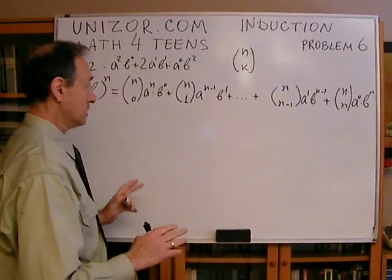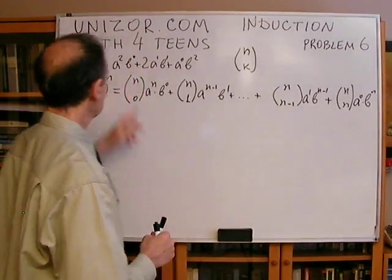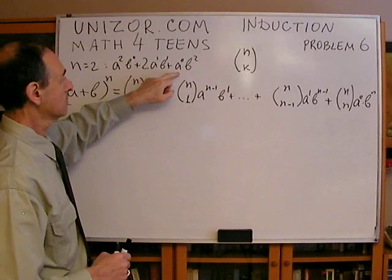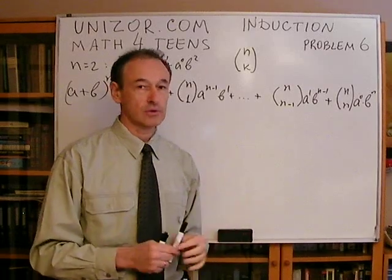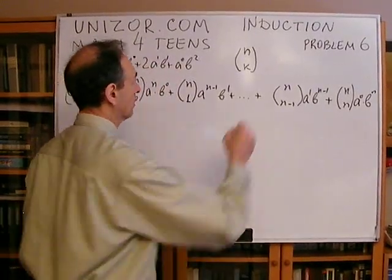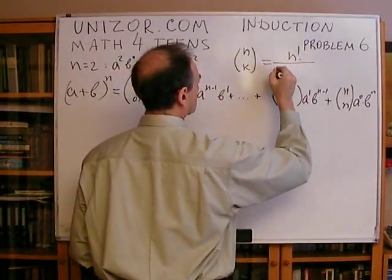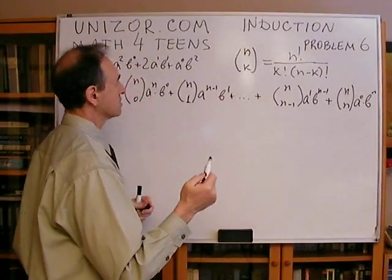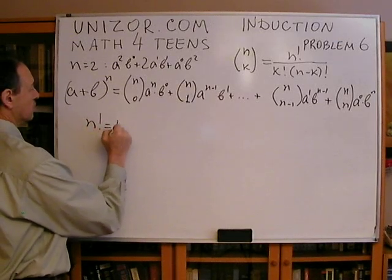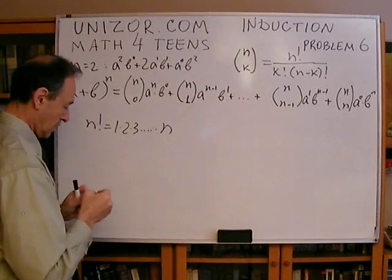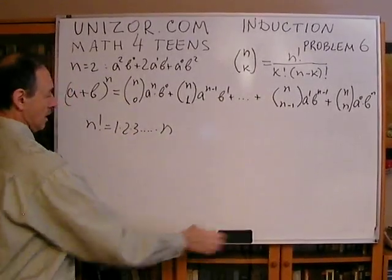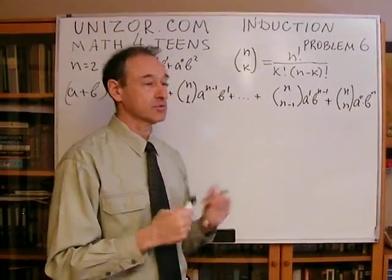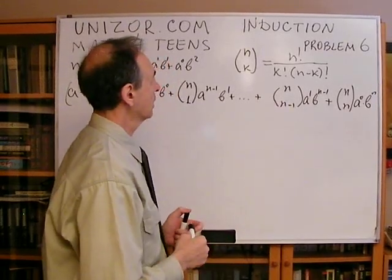What I have not talked about yet is what these coefficients represent. The coefficient C(n,k) is n factorial divided by k factorial times (n−k) factorial. Factorial means n! = 1×2×3×···×n — the product of all integers from 1 to n. We consider this an obvious fact.